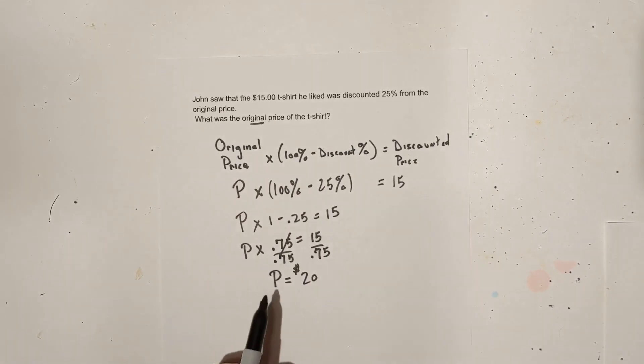So 15 divided by 0.75 is $20. So the original price was $20 of the t-shirt he liked. Let's work another example.